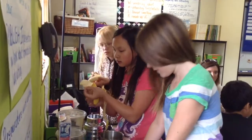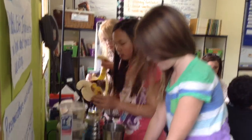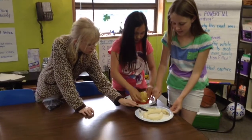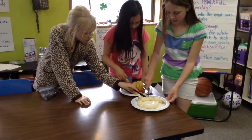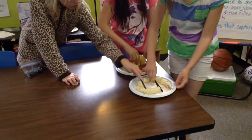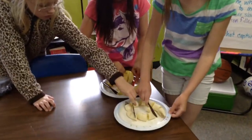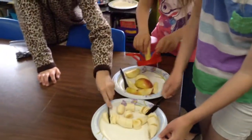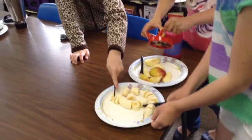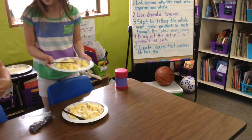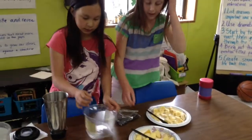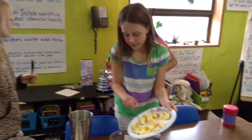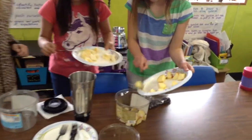First we peel and cut the bananas, then we cut the apples. Then we put some of the bananas, apples, and blueberries in the blender with the ice and the milk.